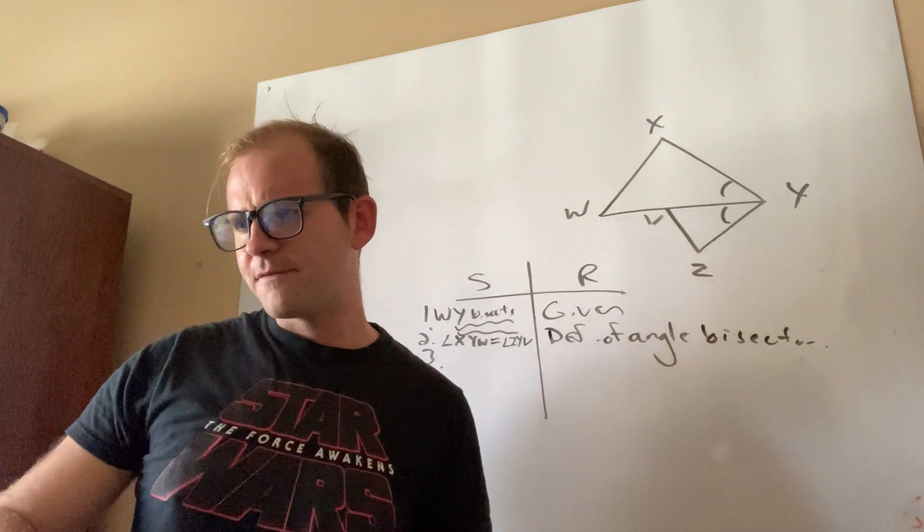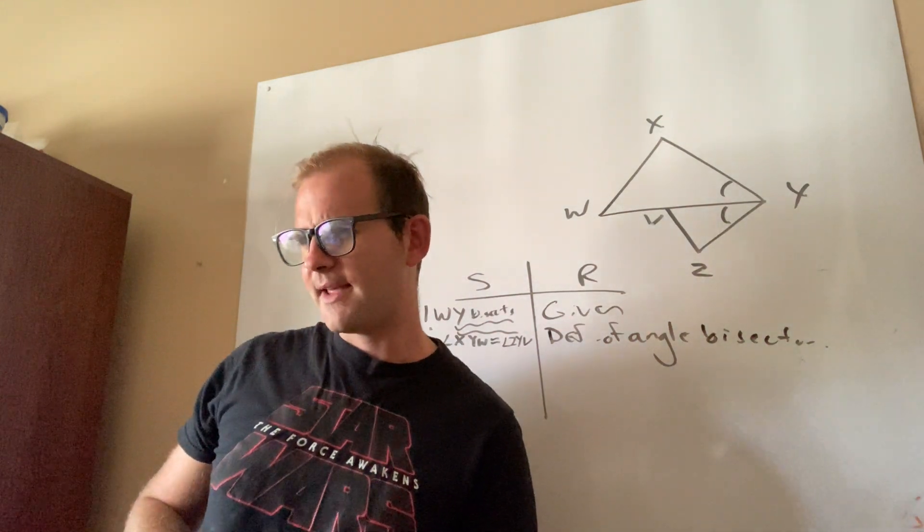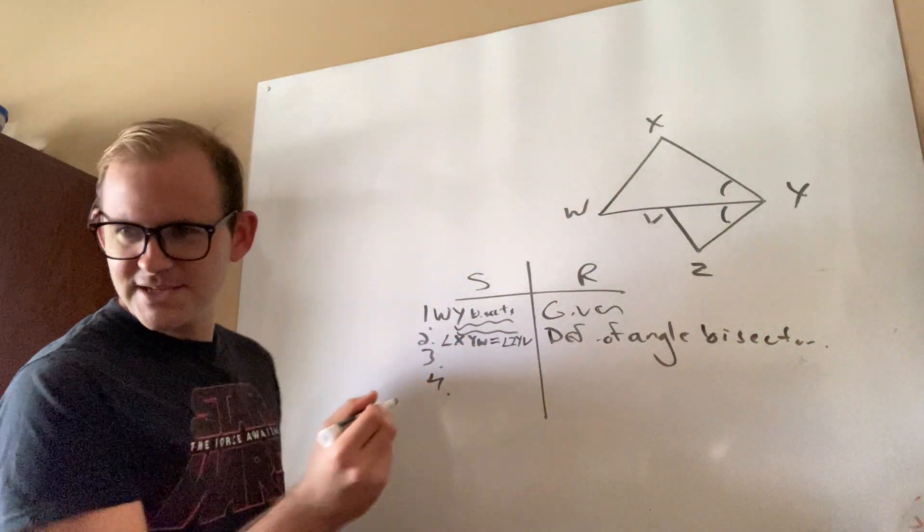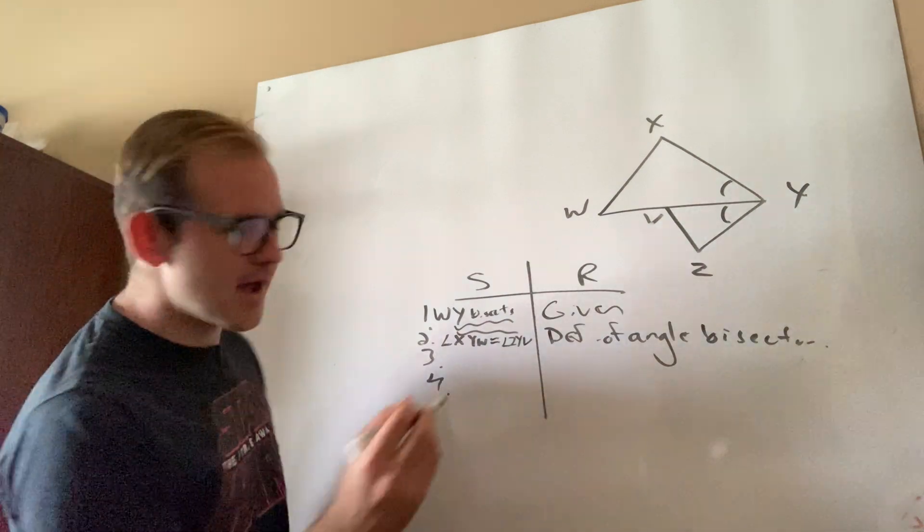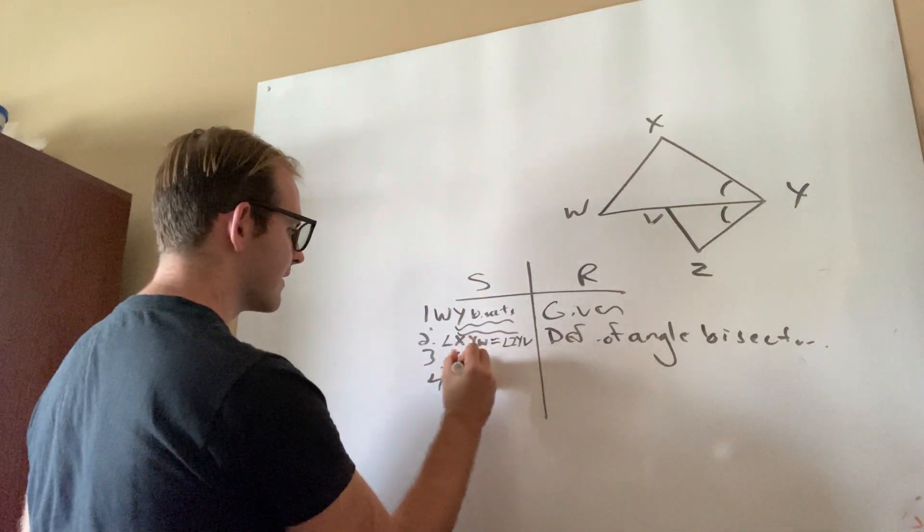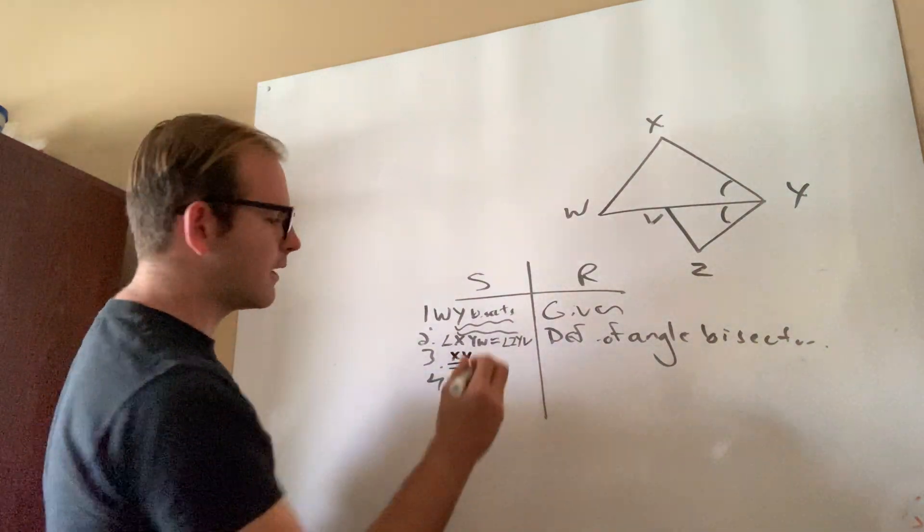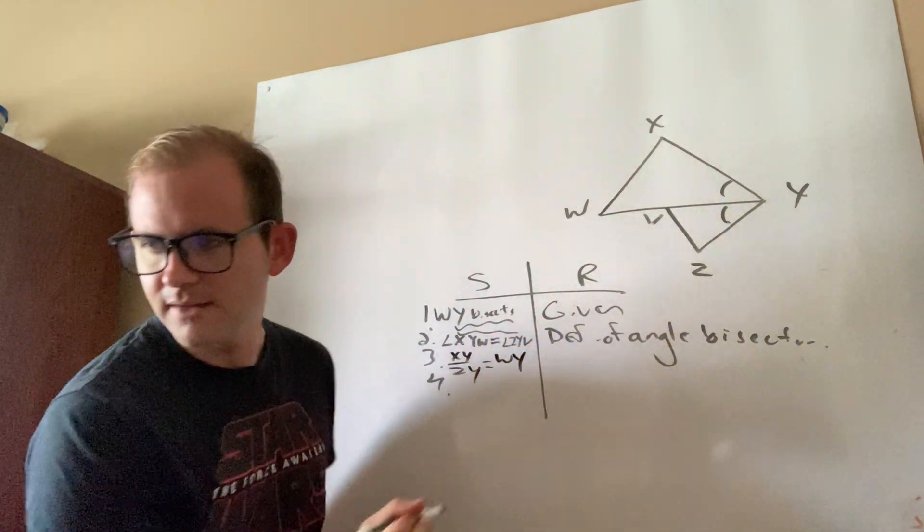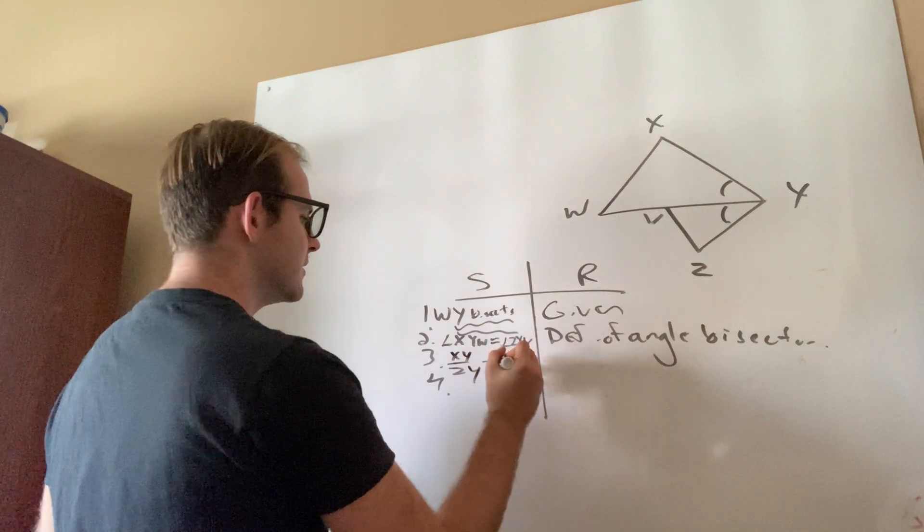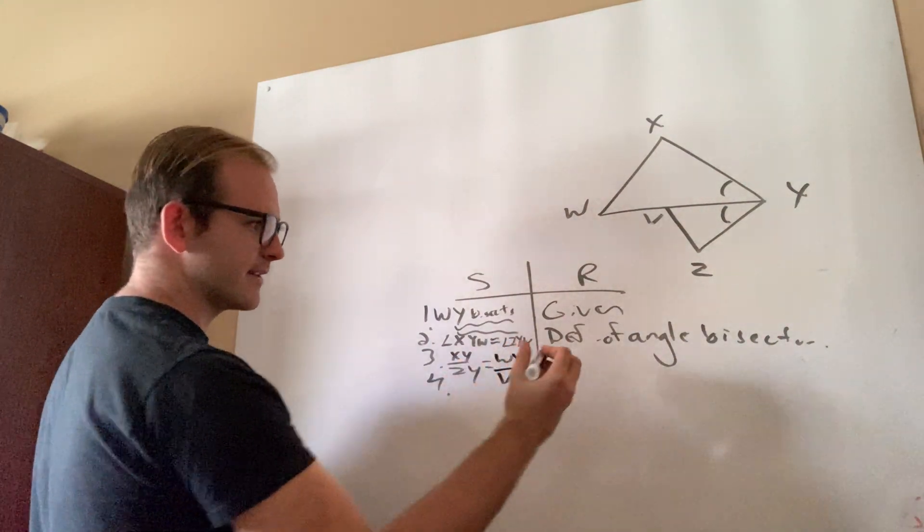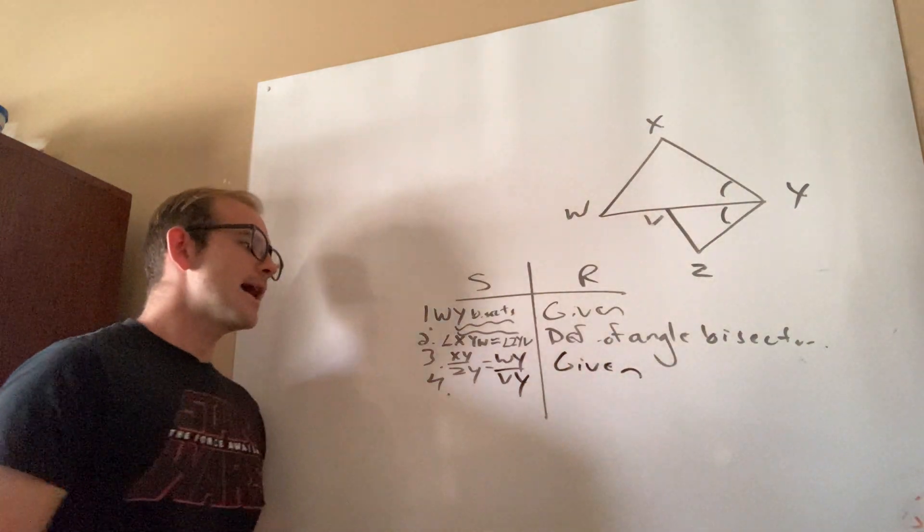Then they give me another part that happened to have already appeared in the original problem, right? Like, it was given to me. So they give me this weird thing like XY over ZY. What the heck is that? Why is that there? Equals WY over VY. So guys, newsflash. If it's given to you in the original problem as part of the given, the reason is going to be given.